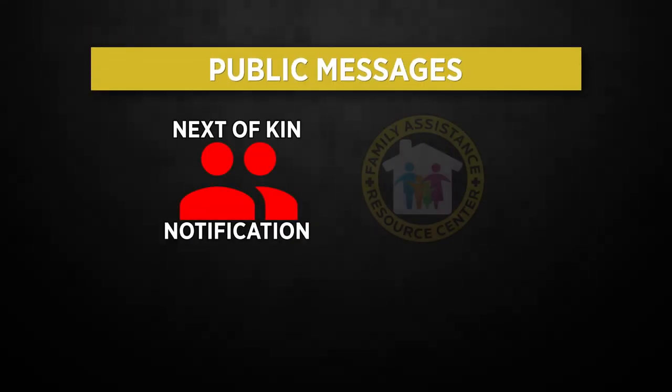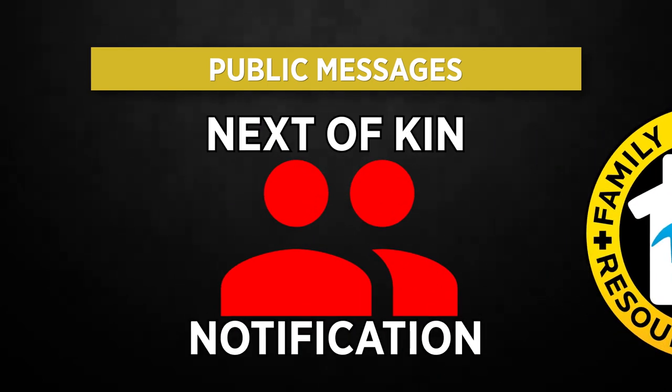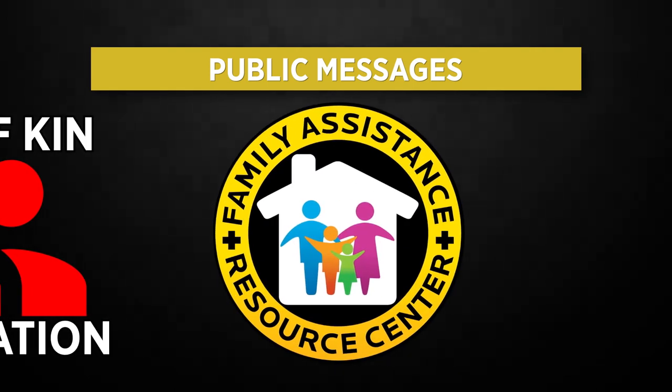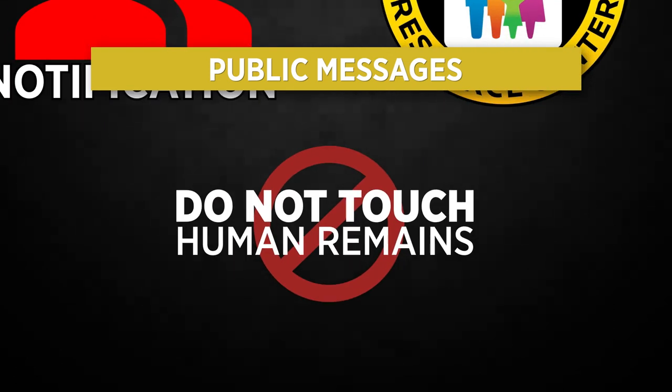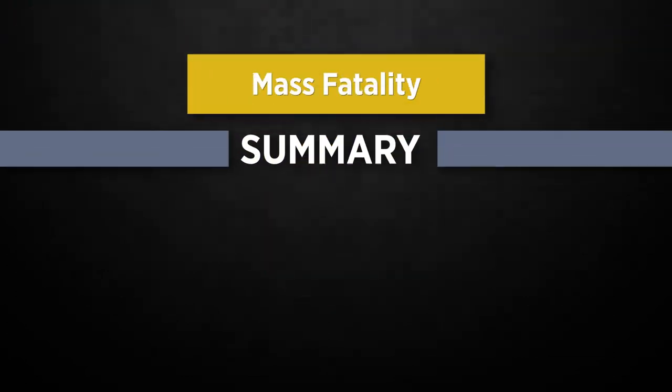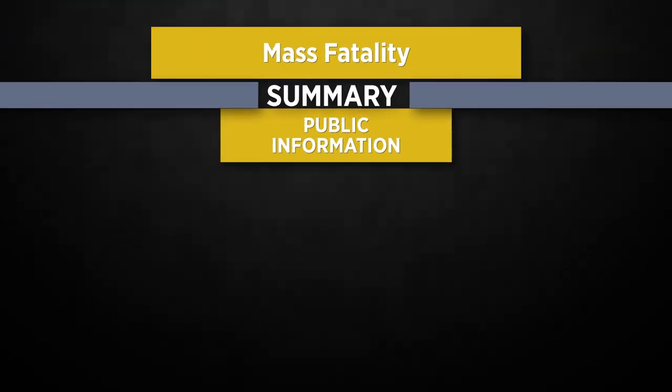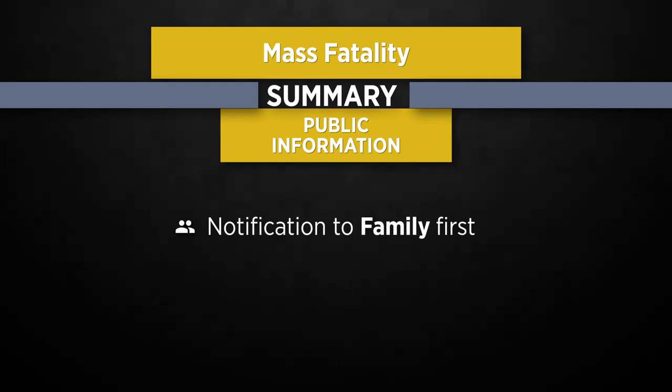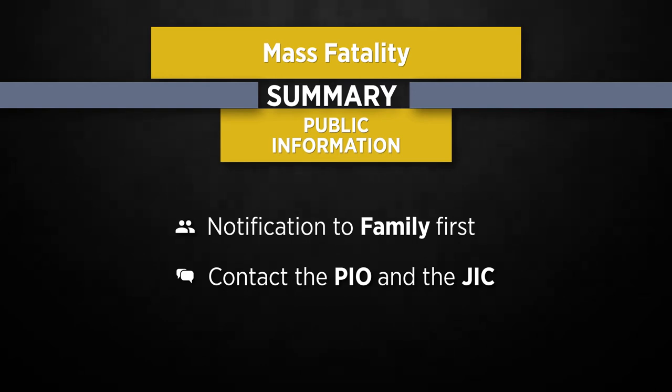We have to make sure that we have a very strong PIO — our public information officer — and good information going back through the Joint Information Center, so that we can make sure we get both timely information out to the media, as well as very specific and personalized information back to the families involved, so they know every step of the way what's going on. Examples of public messages include: names of the deceased will only be released after the next of kin have been notified; report to your local Family Assistance Center if you have questions about a missing family member; and for your safety, do not touch human remains. Ensure that next of kin has been notified first, and contact the PIO and the JIC to coordinate critical messages for the public.